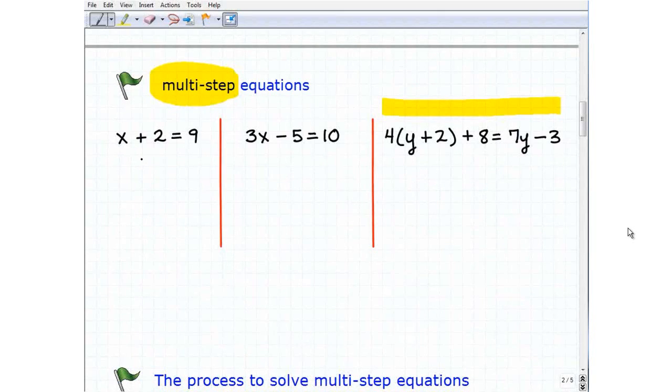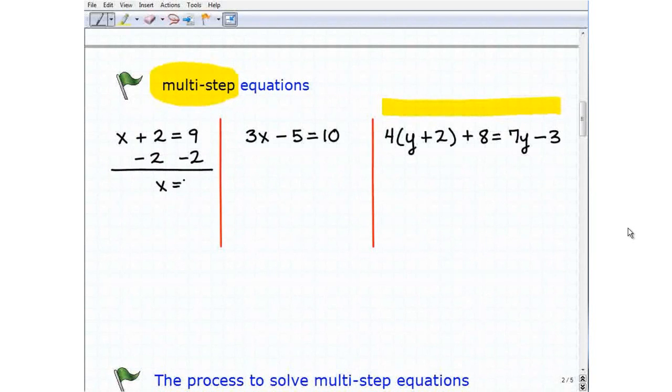So x plus 2 equals 9. We're going to go ahead and subtract 2 from both sides of the equation. And we get x equals 7. That was our one step to solve this equation. Pretty easy, pretty basic. So hopefully most of you got this and totally understand why the solution is 7 and understand inverse operations.